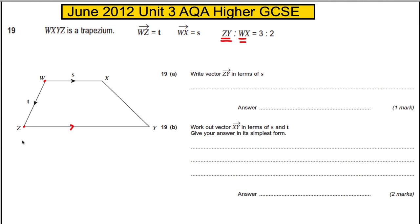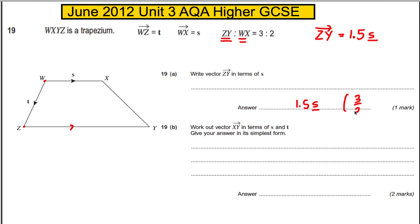If the ZY distance is 3 and the WX distance is 2, then ZY is always one and a half times WX. So the vector from Z to Y is 1.5 times longer — it goes in the same direction as s — giving us 1.5s, or equivalently 3/2 s.